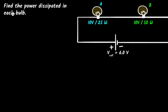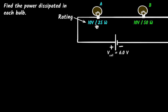Let's move on to the next question. We are asked to find the power dissipated in each bulb. We have two bulbs connected across a battery of 6 volts. The bulbs are rated 10 volt, 25 watt and 10 volt, 50 watt. This rating is not how much power is dissipated right now — it means if 10 volts came across the bulb, then 25 watts would be dissipated. The voltage in this circuit is only 6 volts, so the rating alone doesn't tell us the actual power.